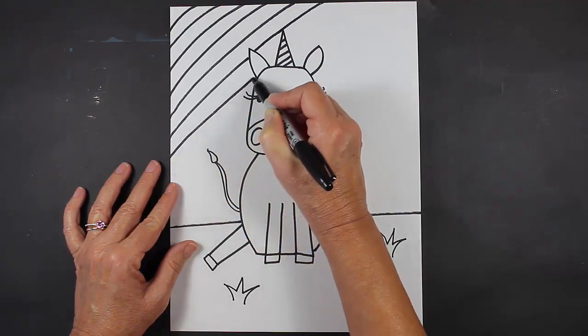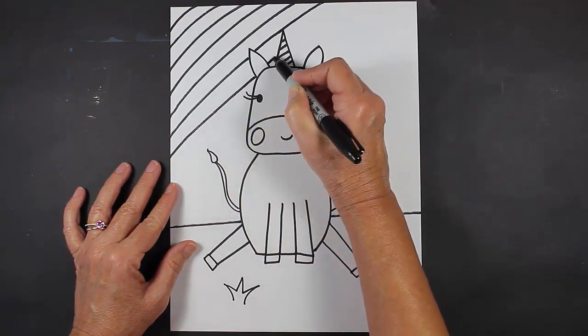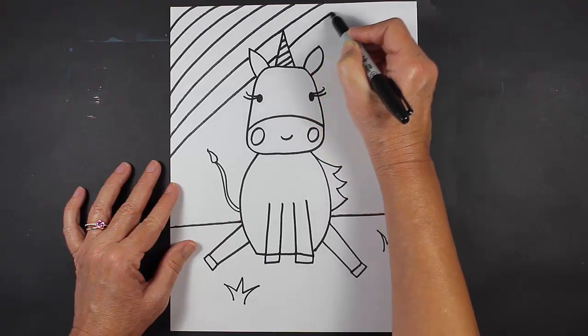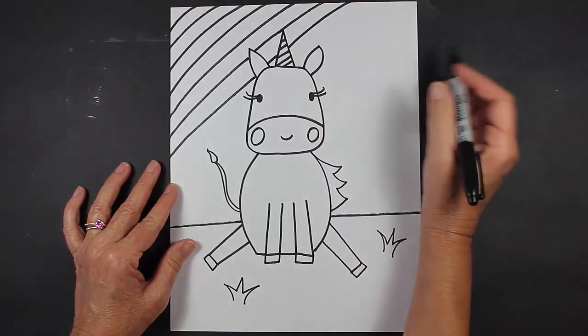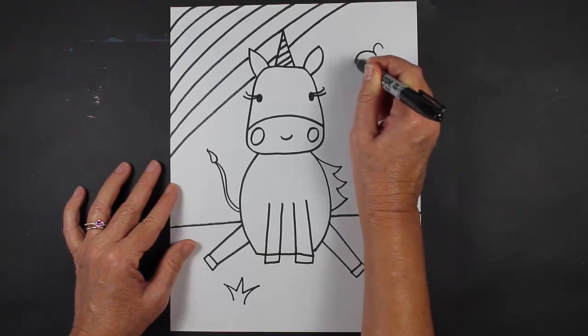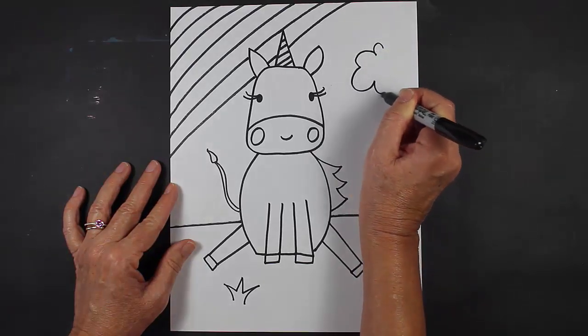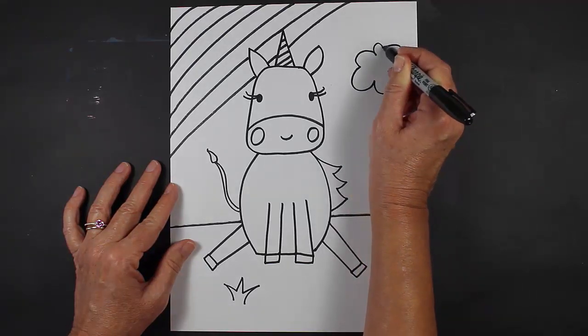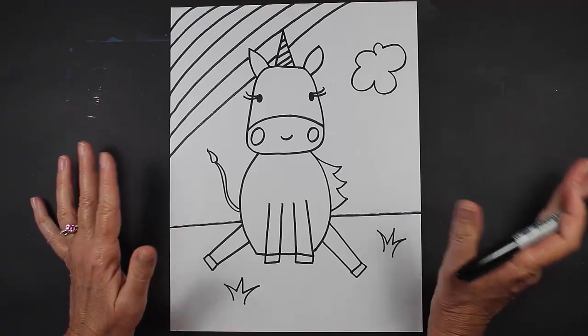Maybe one more, jump right on over my unicorn, come out the other side. I think I'm going to put a white fluffy cloud up here on this side to fill up the space.